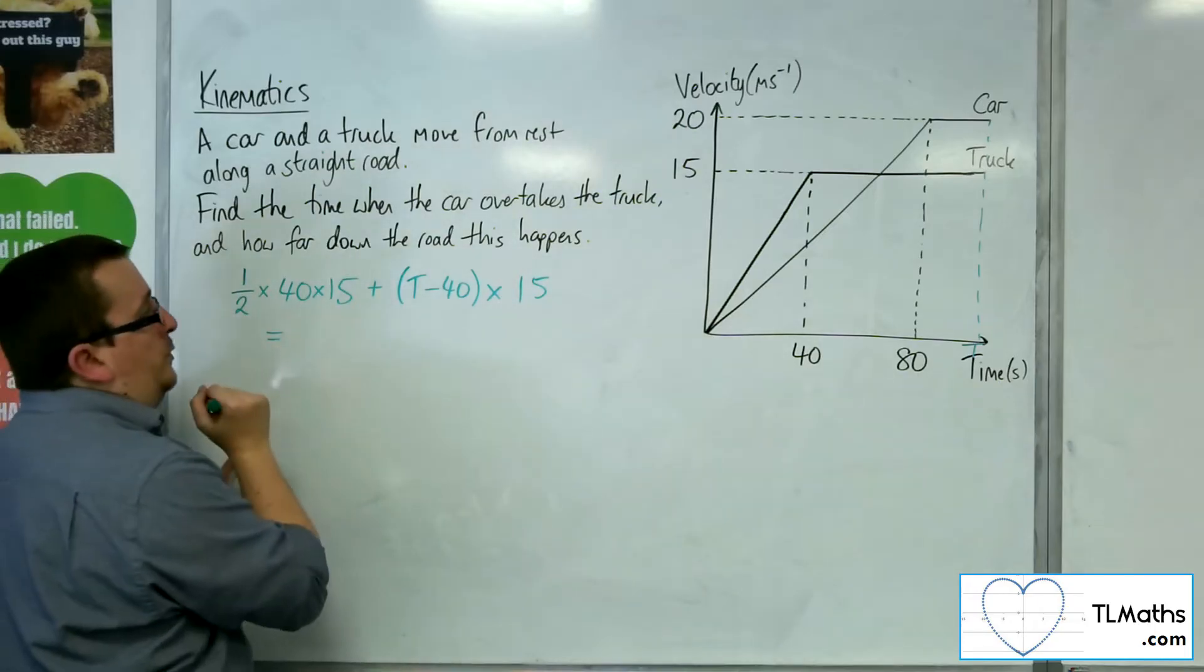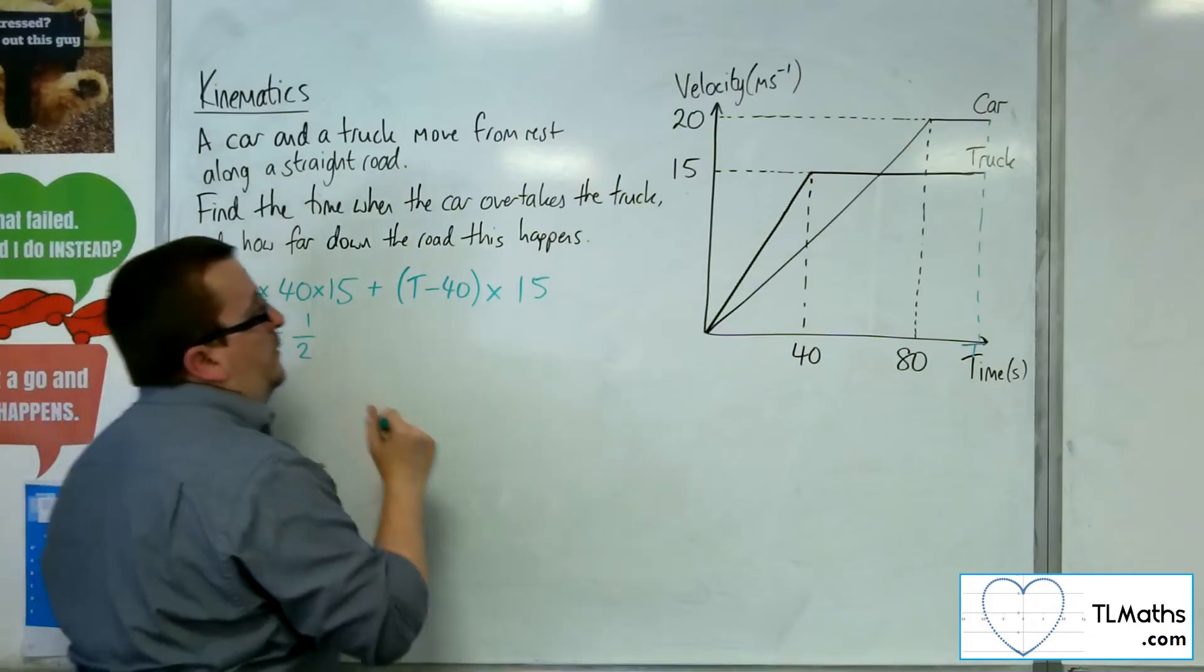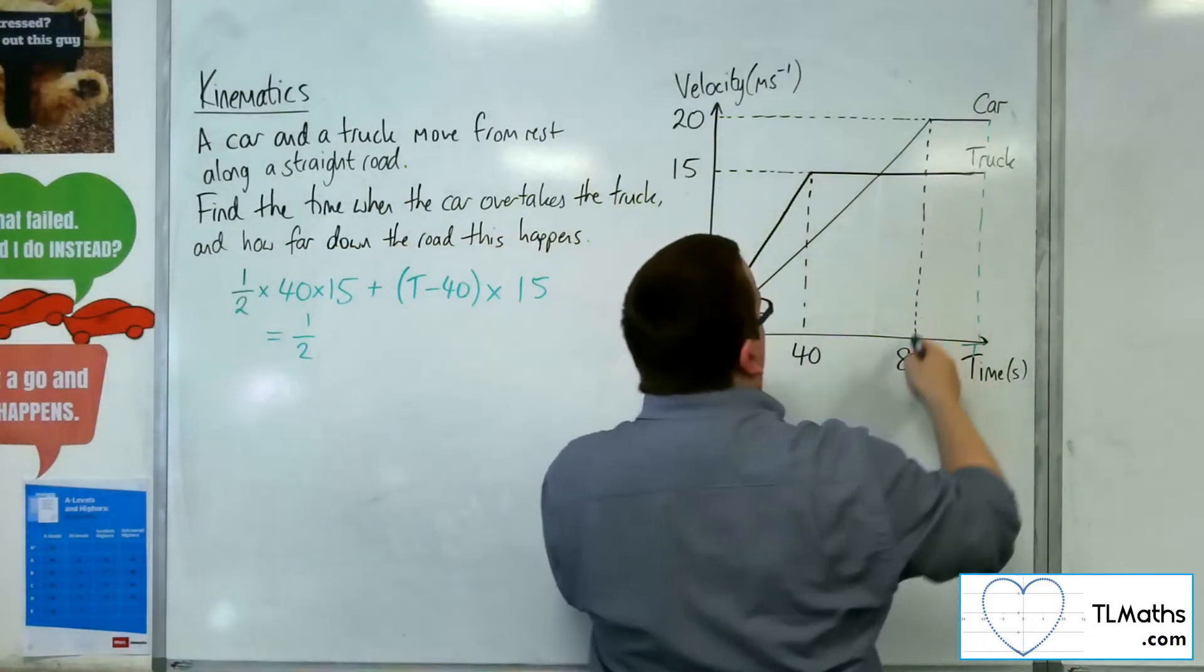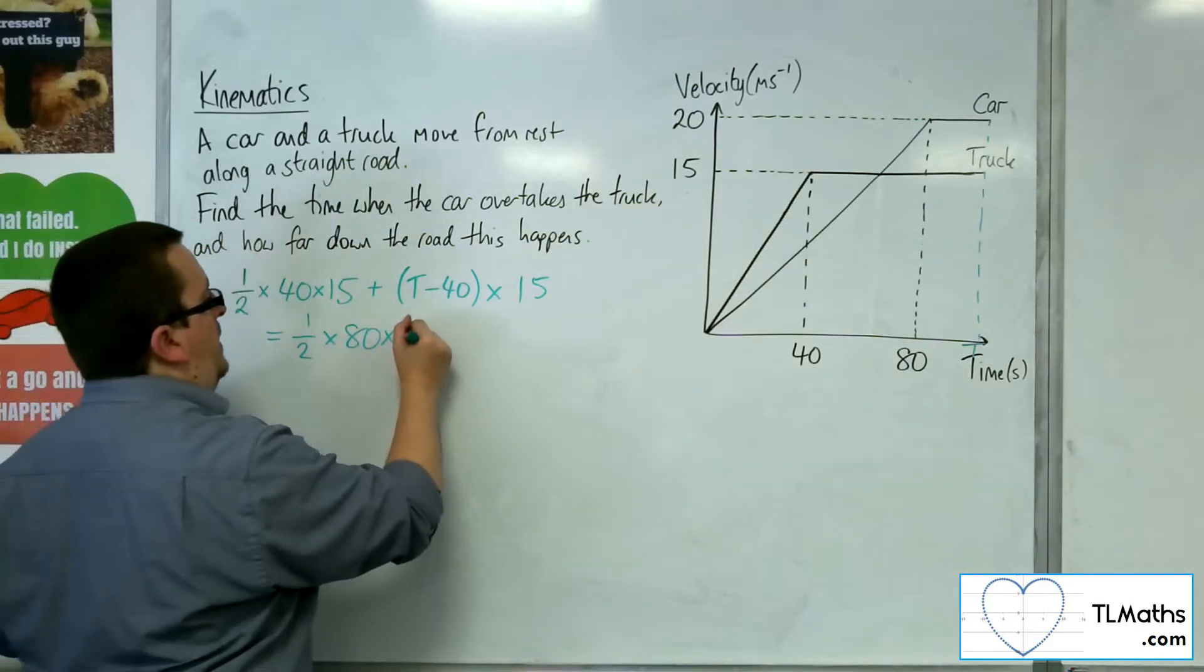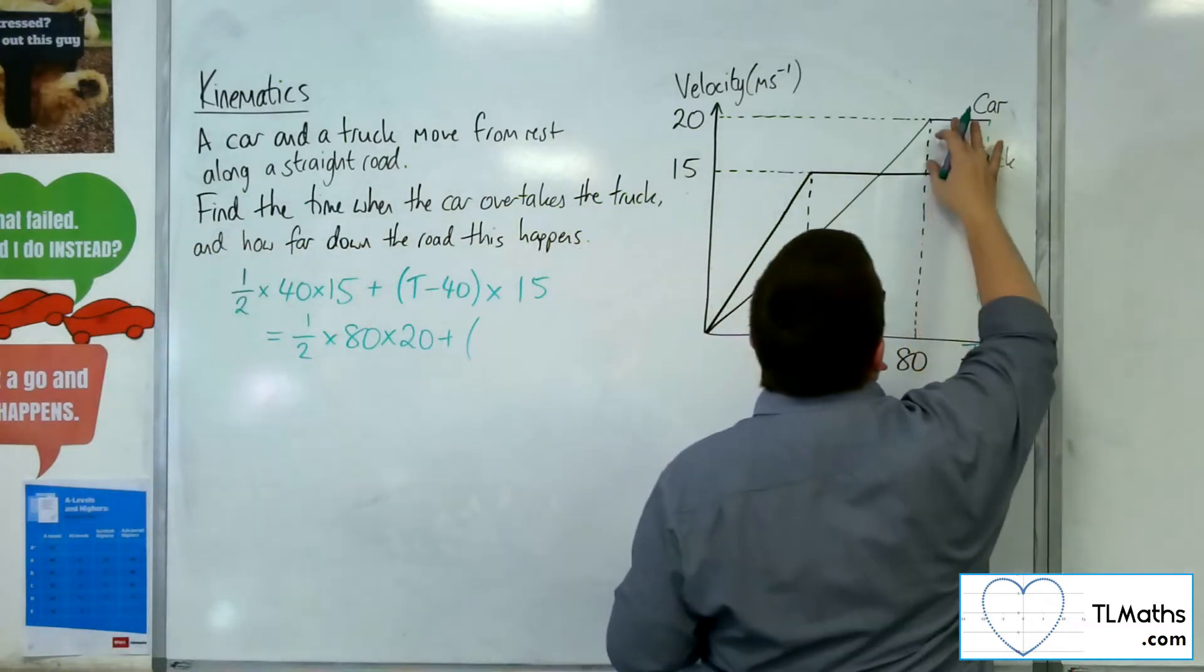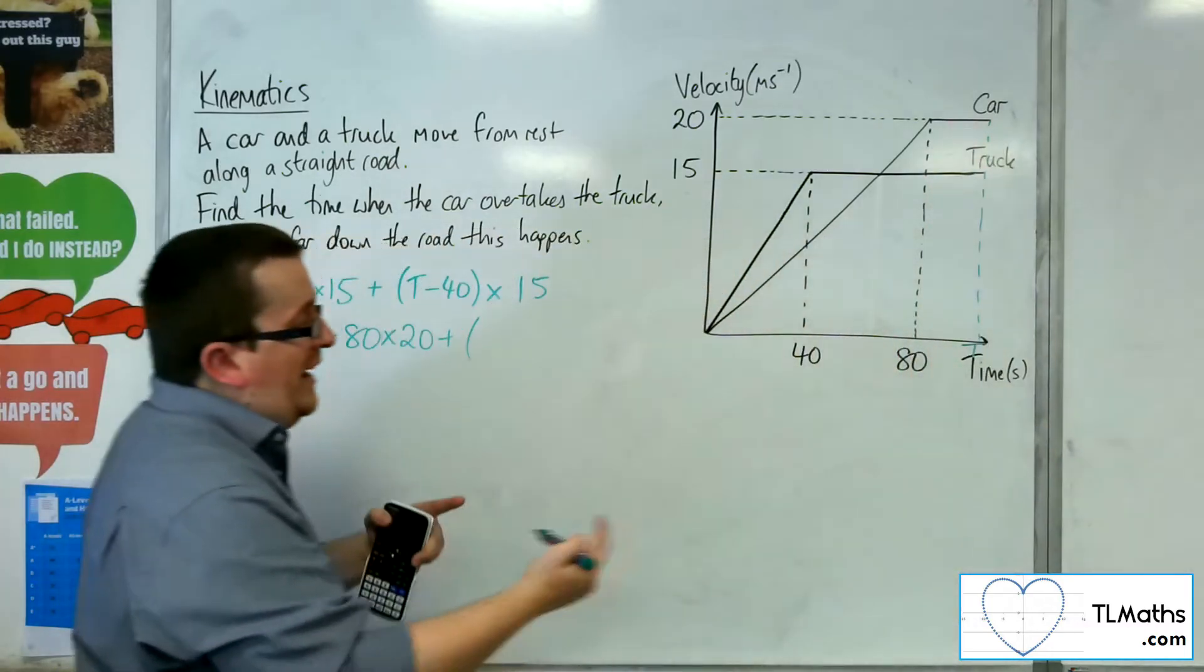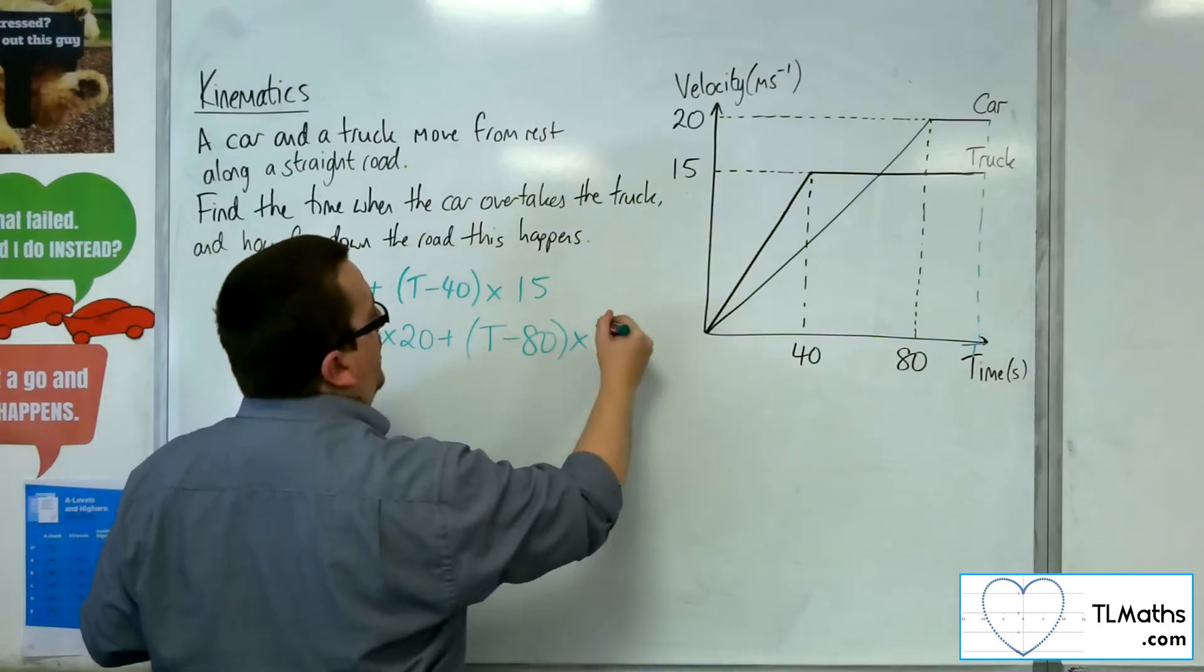And this is going to be equal to, because I want it to be the same distance for the car. So we've got the area of this big triangle, 1/2 times the base, times by the height, plus the area of this rectangle, which is T take away 80, that's the base of the rectangle, times by its height, 20.